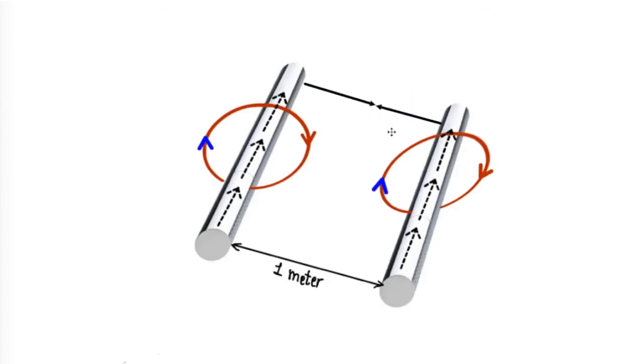When current is varied such that the value of force becomes exactly equal to 2 × 10^-7 Newton between these two conductors, then the current flowing in the conductors has the value of exactly one ampere.